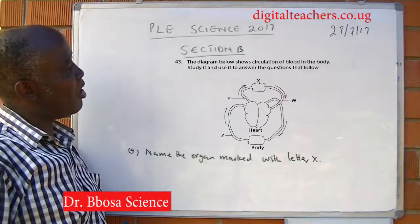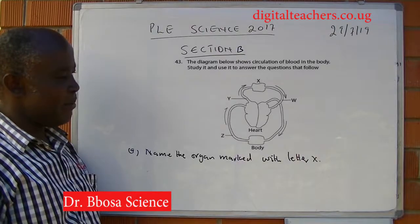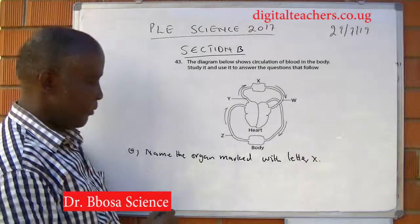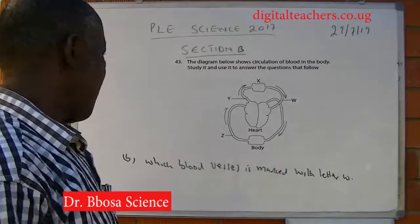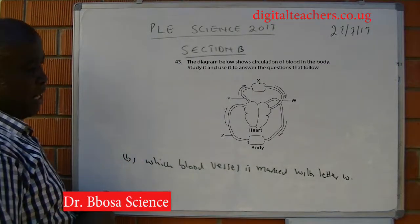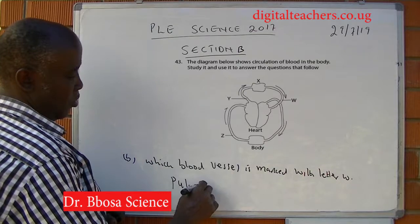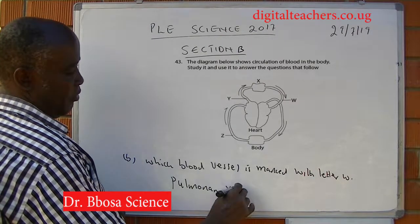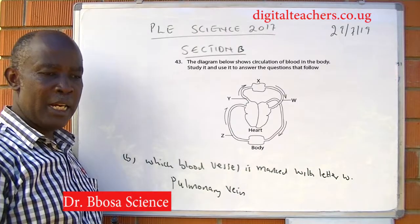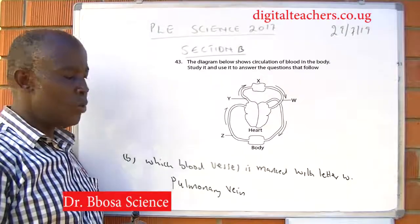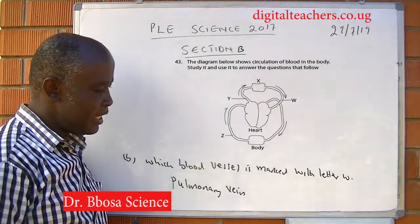Number 43: the diagram below shows circulation of blood in the body. Name the organ marked with letter X. Those are the lungs. Which blood vessel is marked with letter W? That is the pulmonary vein. The pulmonary vein carries oxygenated blood from the lungs to the heart. It is the only vein that carries oxygenated blood.